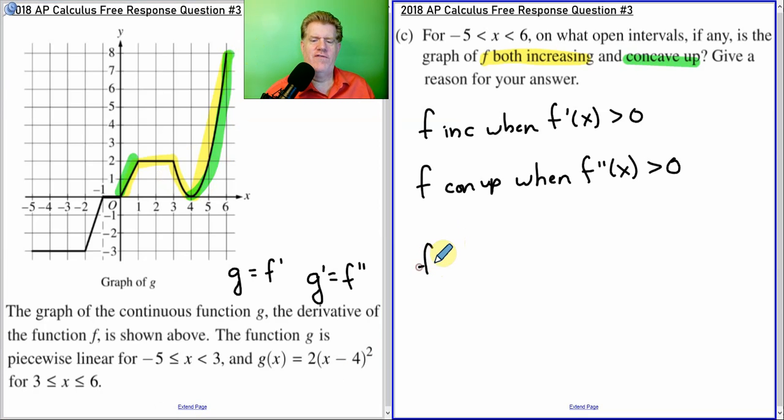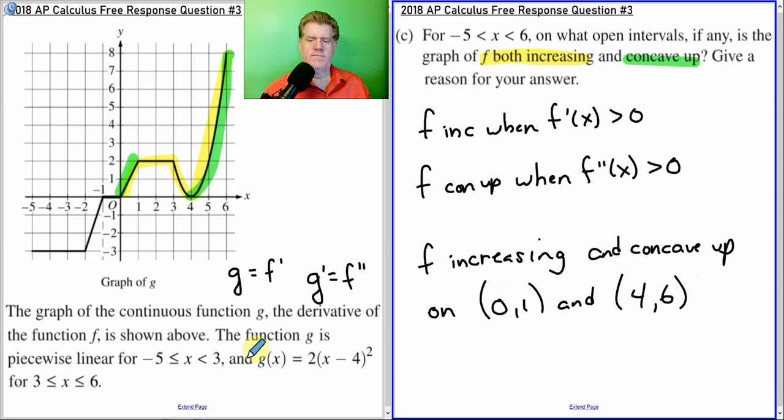So, F is increasing and concave up on the intervals from 0 to 1 and 4 to 6. And our reasoning, our justification, is right here. Let me make that 6 a little nicer. Don't like it. There we go.